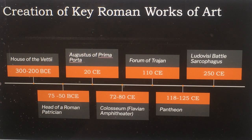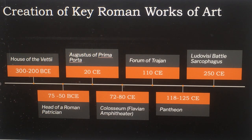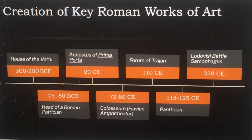Here's the creation key for important Roman works of art: the House of Veti, 300 to 200 BCE; Head of a Roman Patrician, 75 to 50 BCE; Augustus of Prima Porta, 20 CE; the Colosseum (Flavian Amphitheater), 72 to 80 CE; the Forum of Trajan, 110 CE; the Pantheon, 118 to 125 CE; and the Ludovisi Battle Sarcophagus, 250 CE.